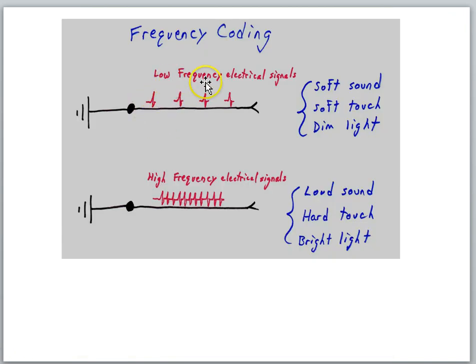Because if we were to measure the frequency of electrical signals in that sensory neuron, we would find that the frequency of signals can vary. Now by frequency we mean how many electrical signals per second. These little marks represent electrical signals racing down the axon of a sensory neuron. And here's the idea we're going to call this frequency coding. If the sound in the environment is a soft sound, then the sensory cell in the ear makes low frequency electrical signals. If it's a loud sound, that same sensory cell would make high frequency electrical signals.